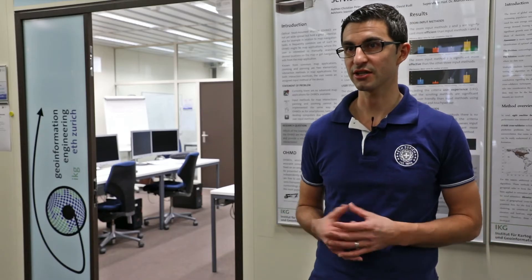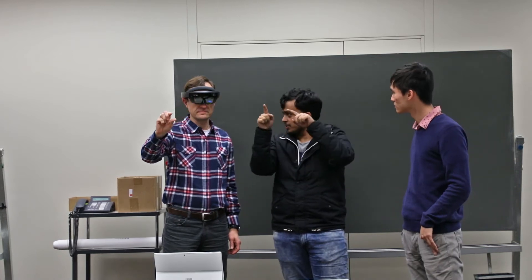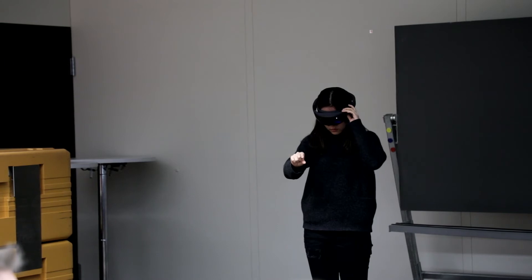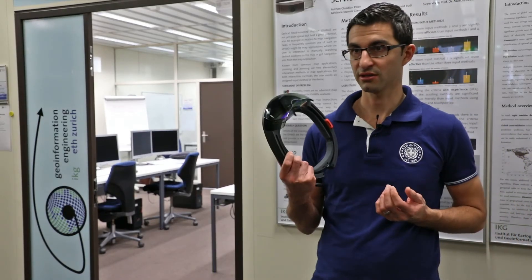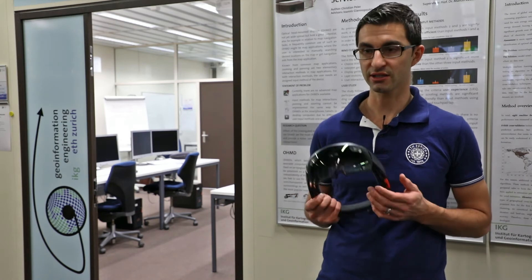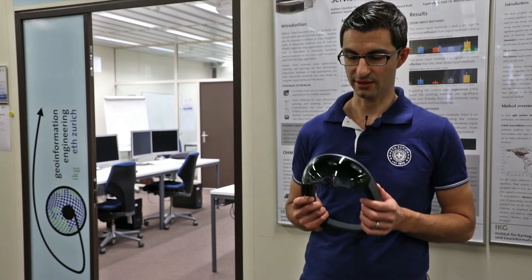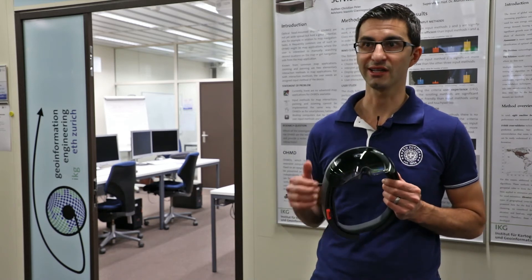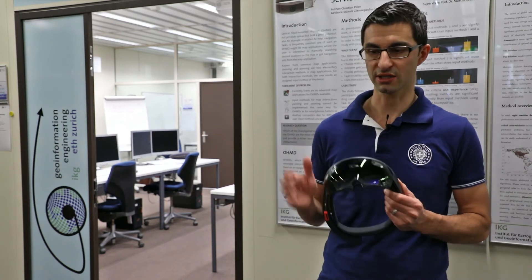After concept presentations, the students started with the development process. They worked iteratively — implementing code snippets in the lab and then testing directly with the HoloLens device. We had four HoloLens devices from ETH SLAT, so the student groups could independently go through cycles of code, test, code, test.